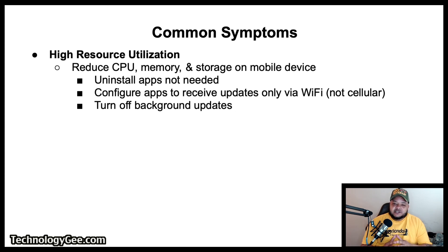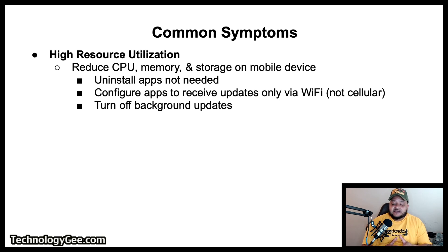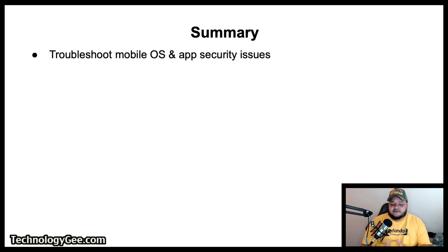To reduce high resource utilization — CPU, memory, and storage — on mobile devices: uninstall apps that are not needed, configure apps to receive updates only via Wi-Fi and not cellular connections, and turn off background updates.